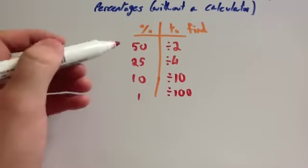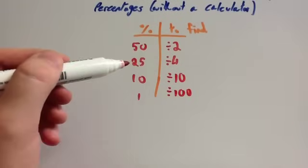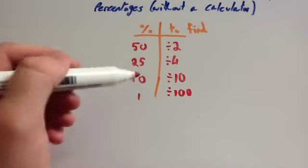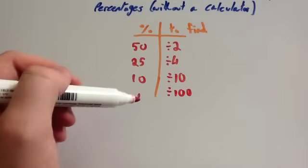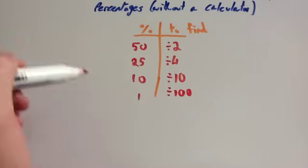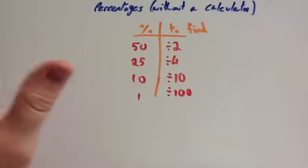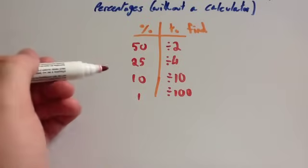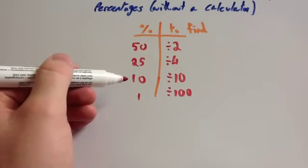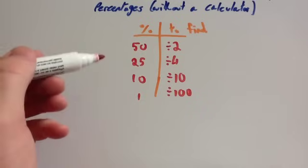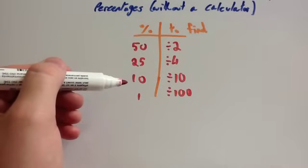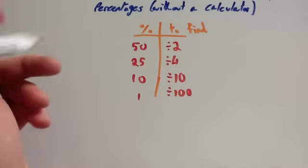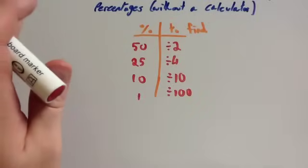You need to learn these off by heart. If you can work these out, you can work out any percentages questions. For instance, if they wanted you to get 5%, well you get 10% and then half it. If they wanted you to get 35% of a number, you can get 25%, get 10%, and add them together. That would be 35%. Let's look at some questions now.